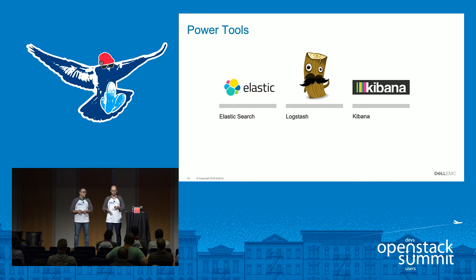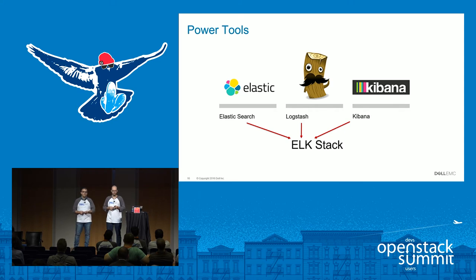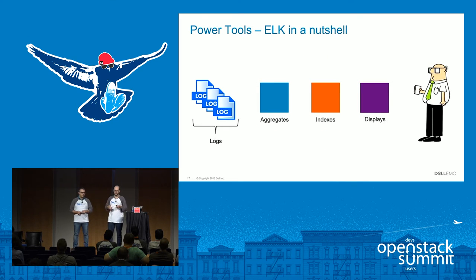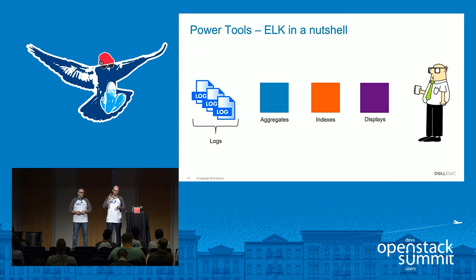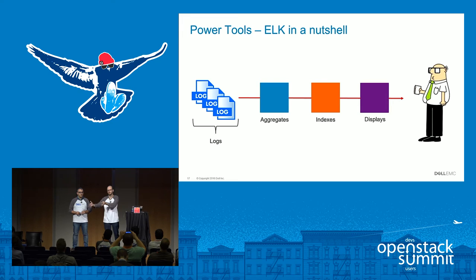Some of the power tools we mentioned today are Elasticsearch, Logstash, and Kibana — the three of them together form the ELK stack. Every component in OpenStack will generate logs — Nova will generate its log, Neutron, and so on. The more logs you have, the more difficult it is to search through them. What ELK provides is a way for you to aggregate, index, and display that information to the end user — simple, user-friendly, and customizable.